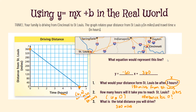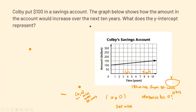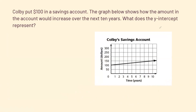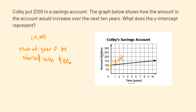Next example: Colby puts $100 in a savings account. The graph shows how the amount in the account increases over the next 10 years. What does the y-intercept represent? The graph crosses the y-axis at the point (0, 100). Since x values represent time in years and y values represent dollars, this means that at year zero, Colby started with $100. That is our initial value — our starting point for how much he is saving.